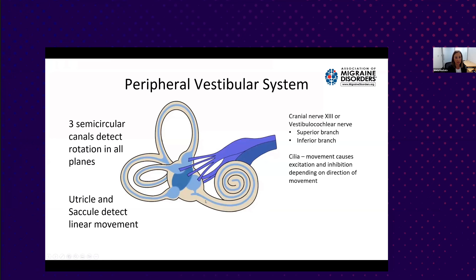The three semicircular canals detect rotation in all the different planes. The utricle and the saccule function like gravity sensors—they detect where your head is in relation to gravity, as well as any kind of linear movement. The end cells are the hair cells, which have little hair-like projections called cilia. The cilia move with the fluid movement of the inner ear with any head movement, causing excitation or inhibition depending on the direction, sending signals via the vestibulocochlear nerve.